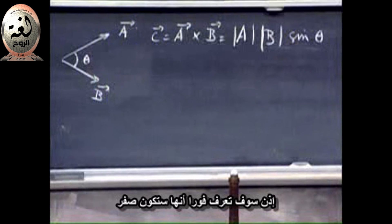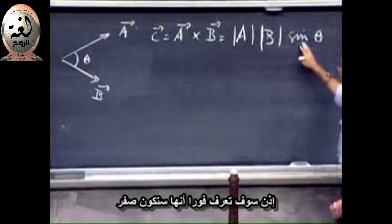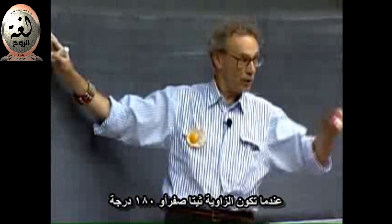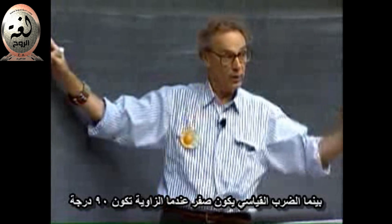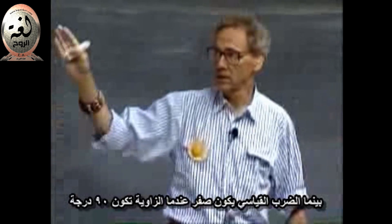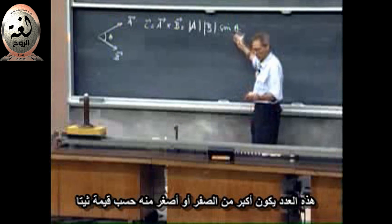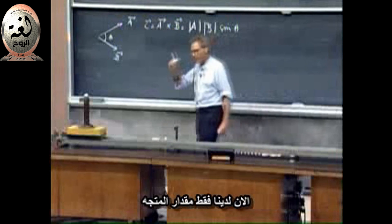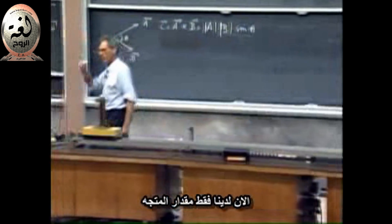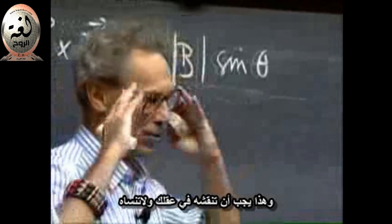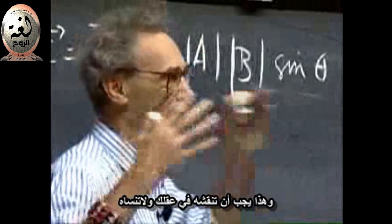So you can already immediately see that this will be zero if theta is either zero degrees or 180 degrees, whereas the dot product was zero when the angle between them was 90 degrees. This number can be larger than zero. If the sine theta is larger than zero, it can also be smaller than zero. Now we only have the magnitude of the vector, and now comes the hardest part. What is the direction of the vector?